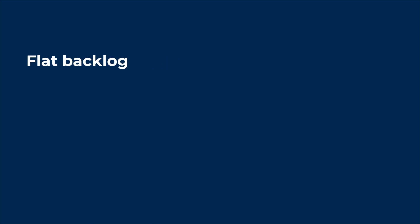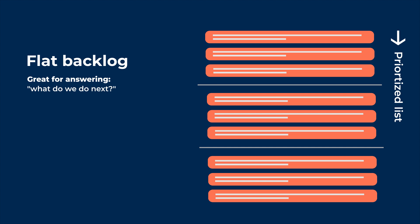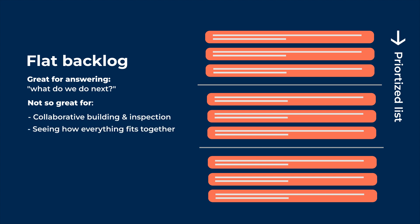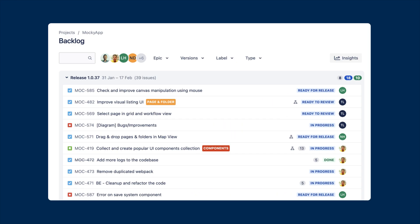Let's start with the product flat backlog in product management. Traditional product backlogs are flat. A prioritized list is great for answering what do we do next, but it's not so great for collaborative building and inspection, seeing how everything fits together, balancing a view of user value features with the need for iteration size stories, and planning coherent value-based releases. A flat backlog is not good for showing the big picture.